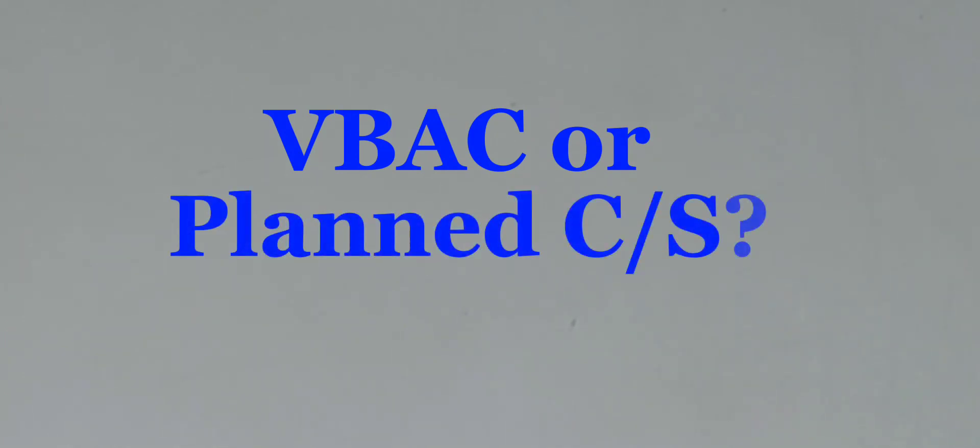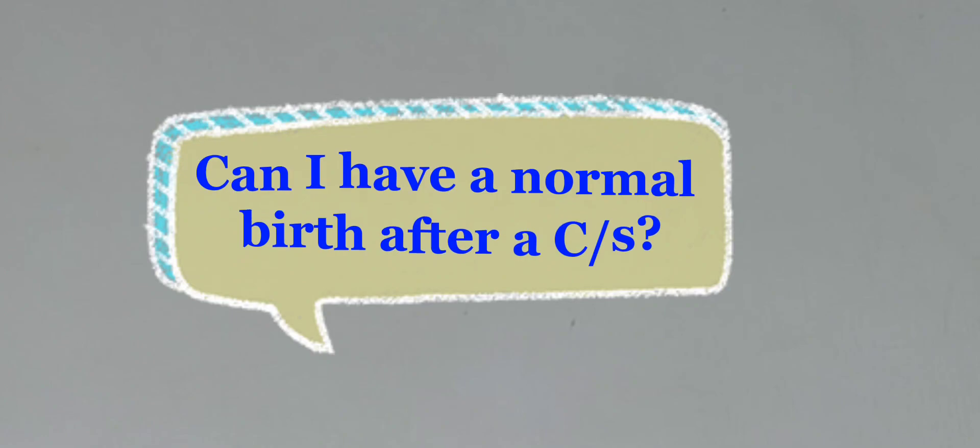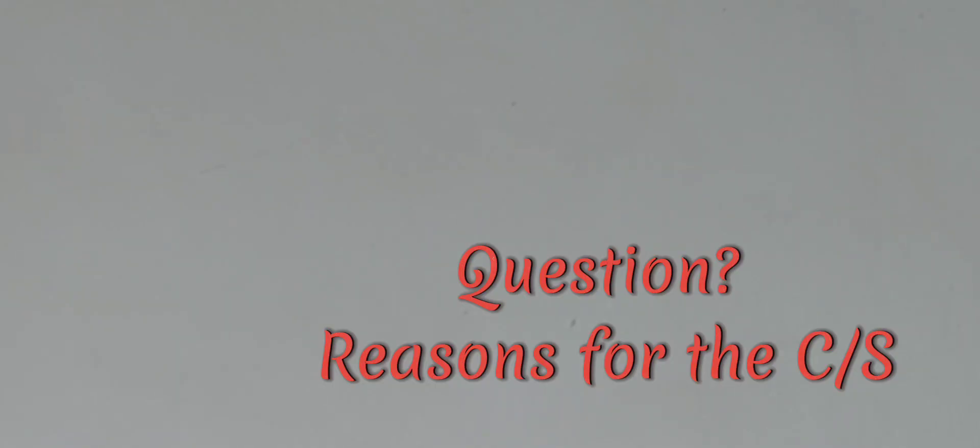We want to ask ourselves this question today: do we go for VBAC, or do we actually go for a planned cesarean section? Have you ever had a cesarean section before? And if you have, have you had questions whether or not you can give birth normally in the subsequent pregnancies? The first question we need to ask ourselves is: why was the cesarean section done before?